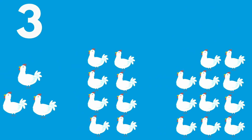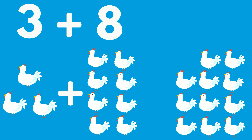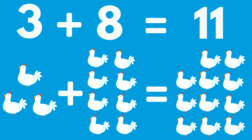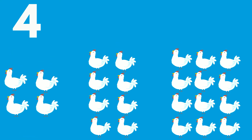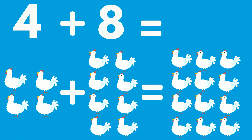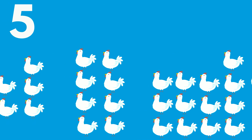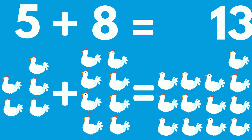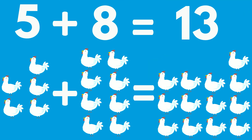3 chickens plus 8 chickens equals 11 chickens. 4 chickens plus 8 chickens equals 12 chickens. 5 chickens plus 8 chickens equals 13 chickens.